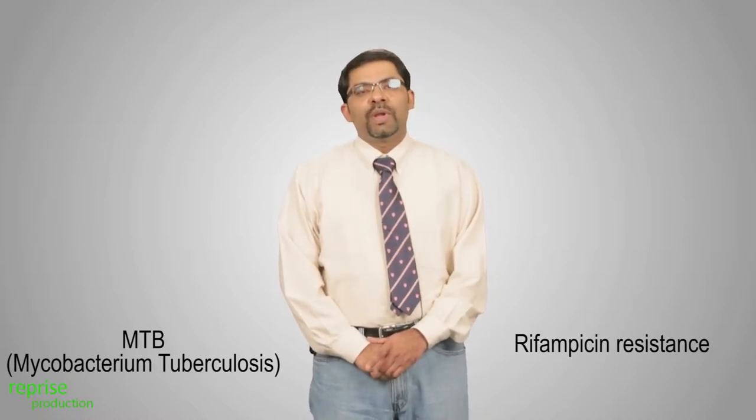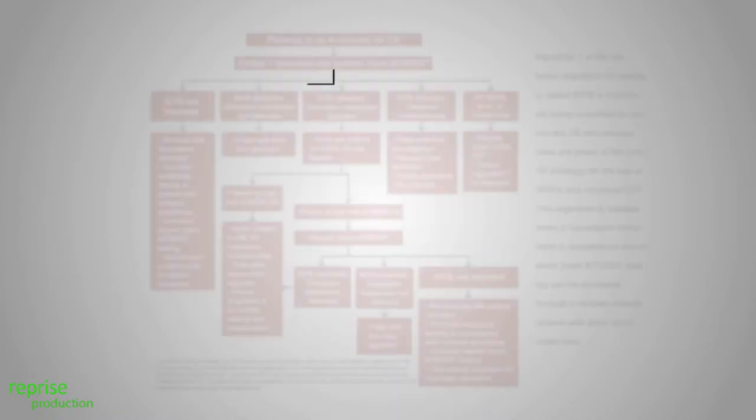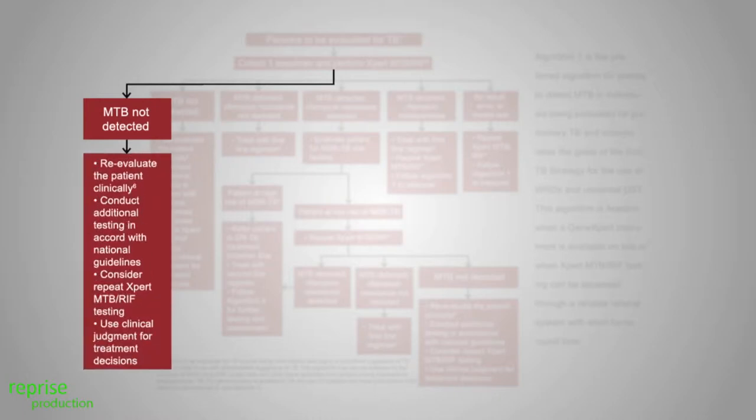So when your GeneXpert results come back, when you look at the result, if GeneXpert is negative, then if you still suspect TB, then you will have to rely on your clinical judgment, use other diagnostic tests as a liquid culture for example, or if you still are worried about TB, maybe you can repeat the GeneXpert one more time. And if all tests are negative, then it is up to you to use your clinical judgment and then rule out TB and look for other causes of the person's symptoms.